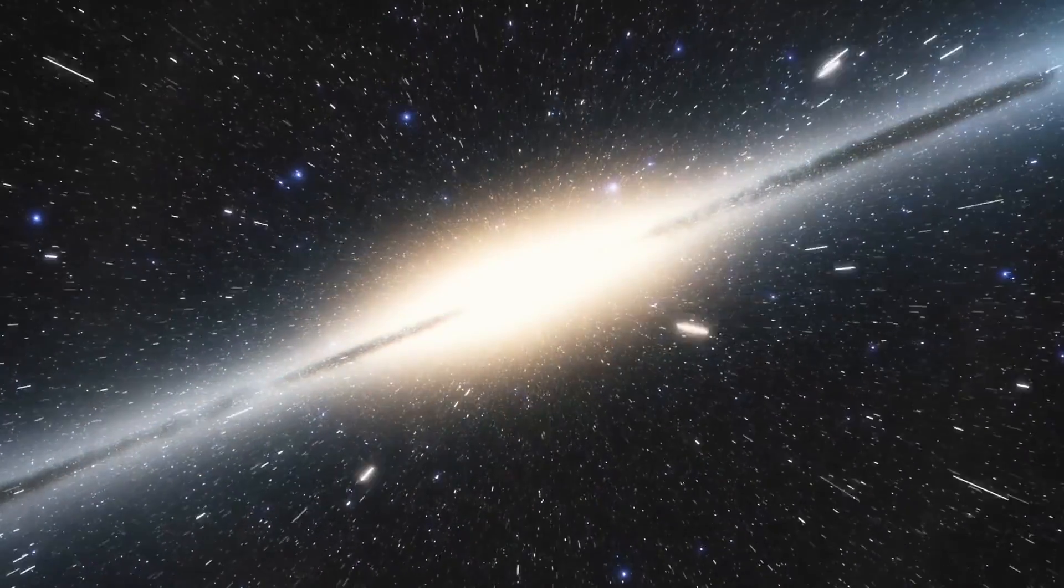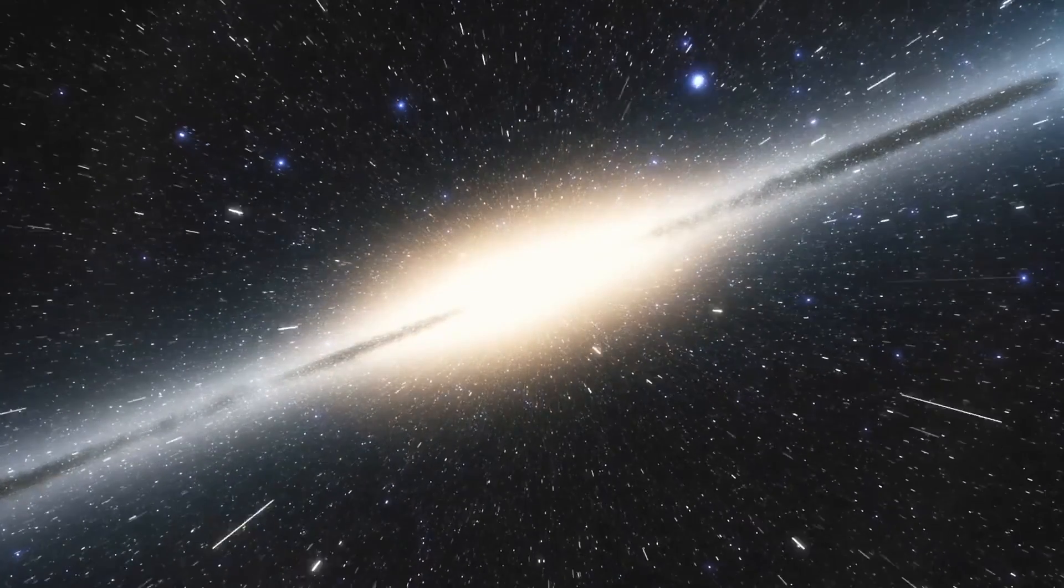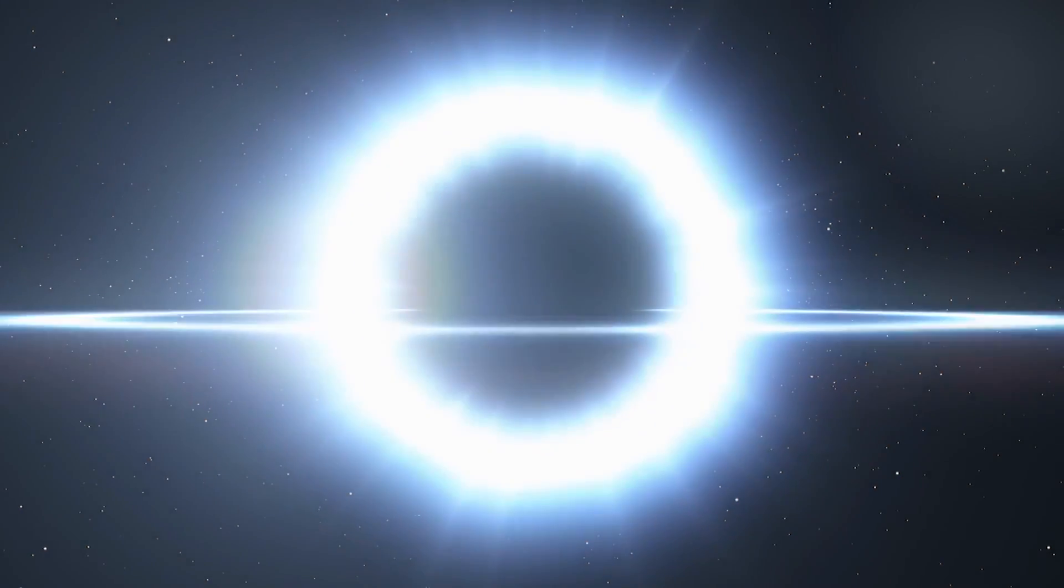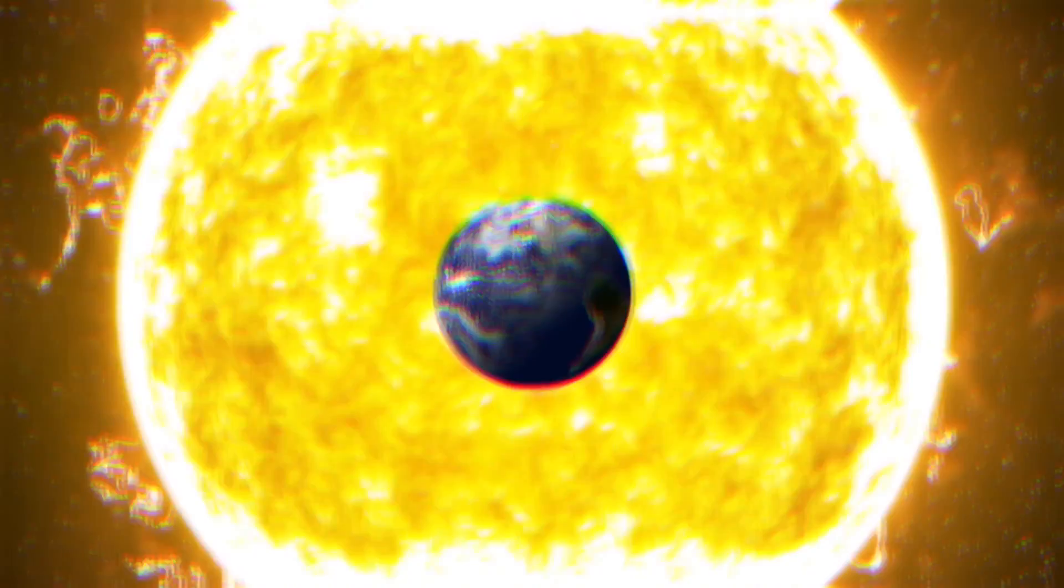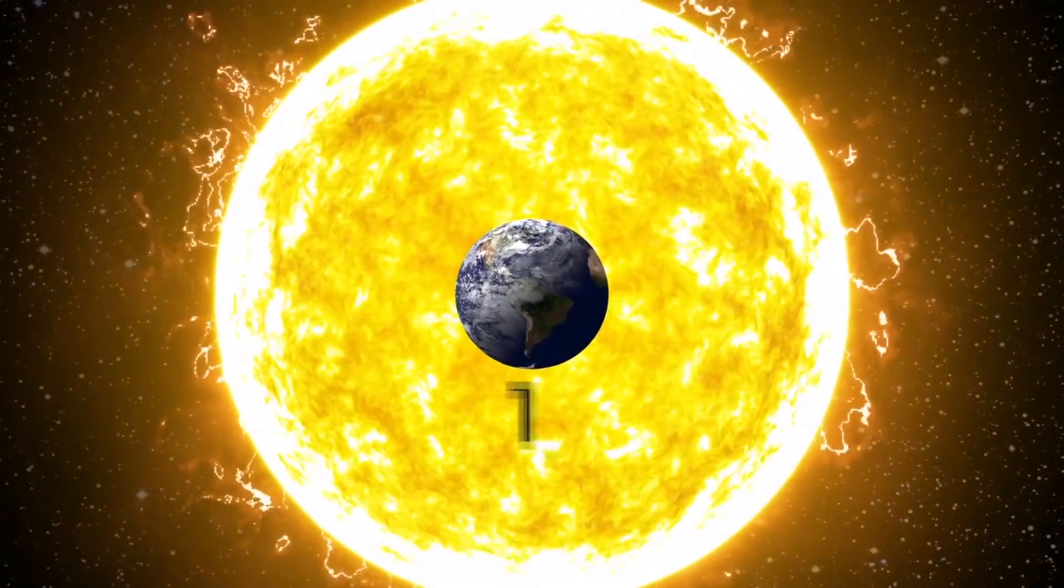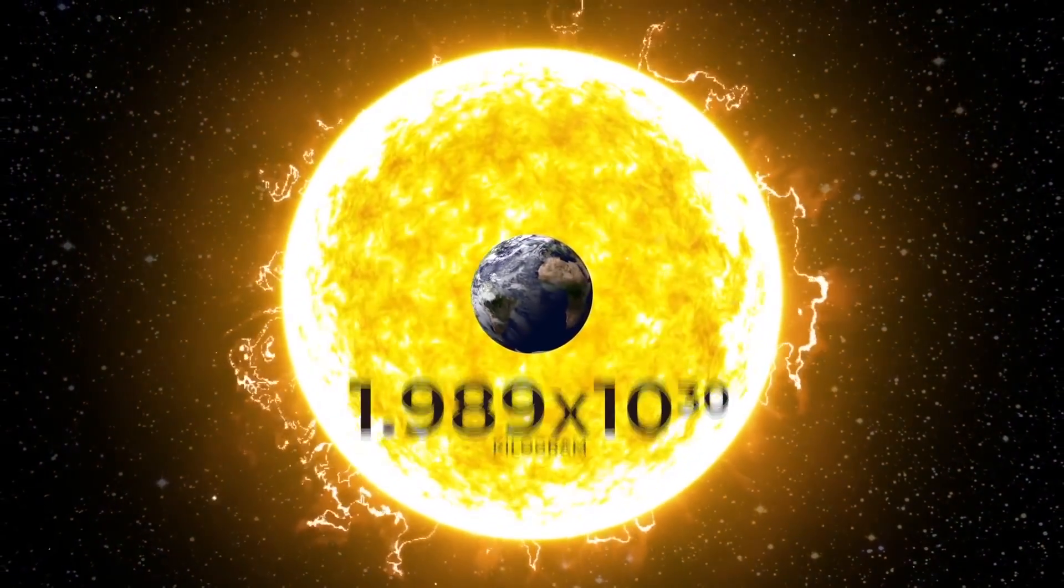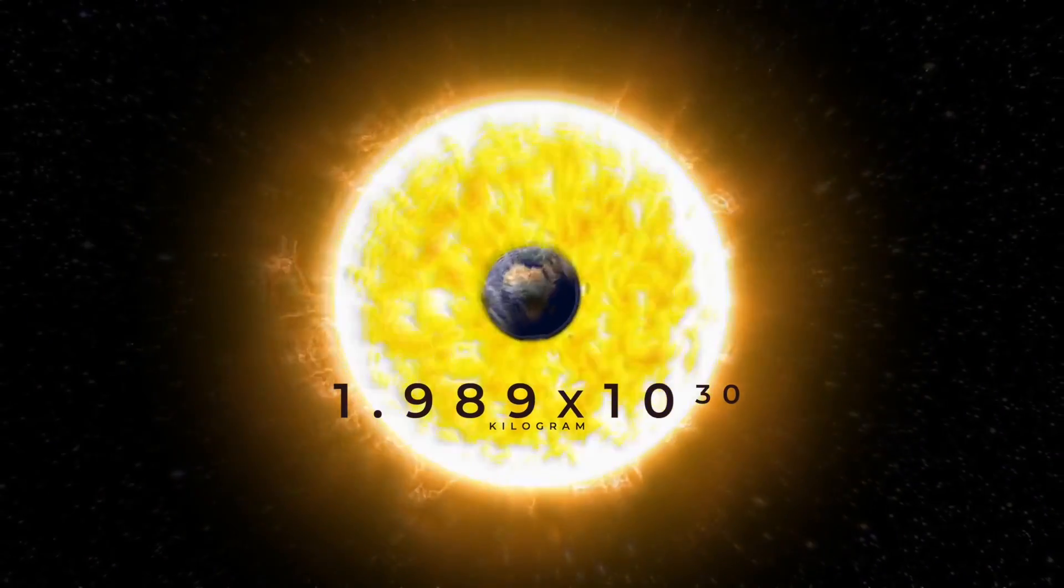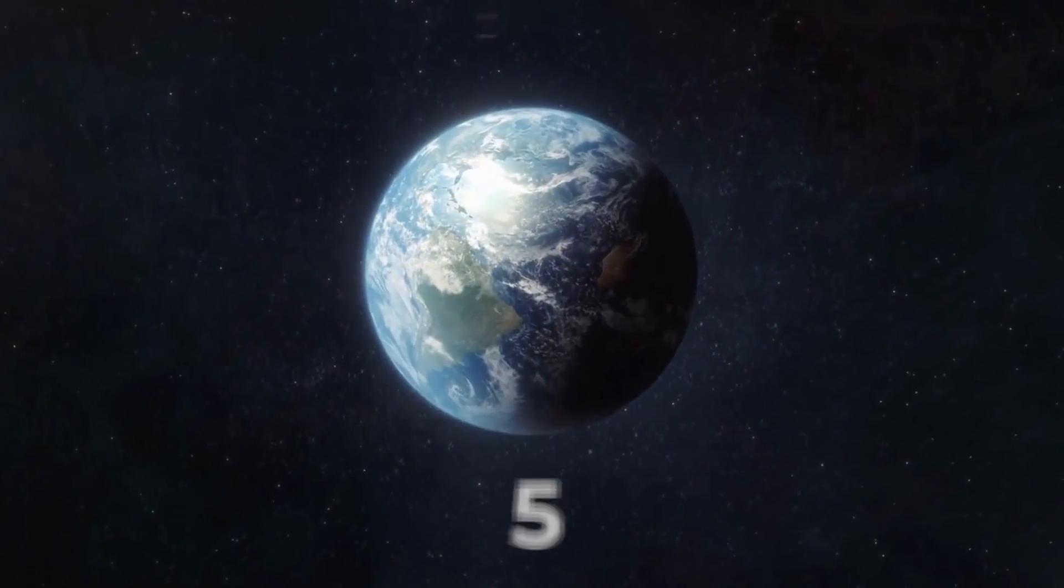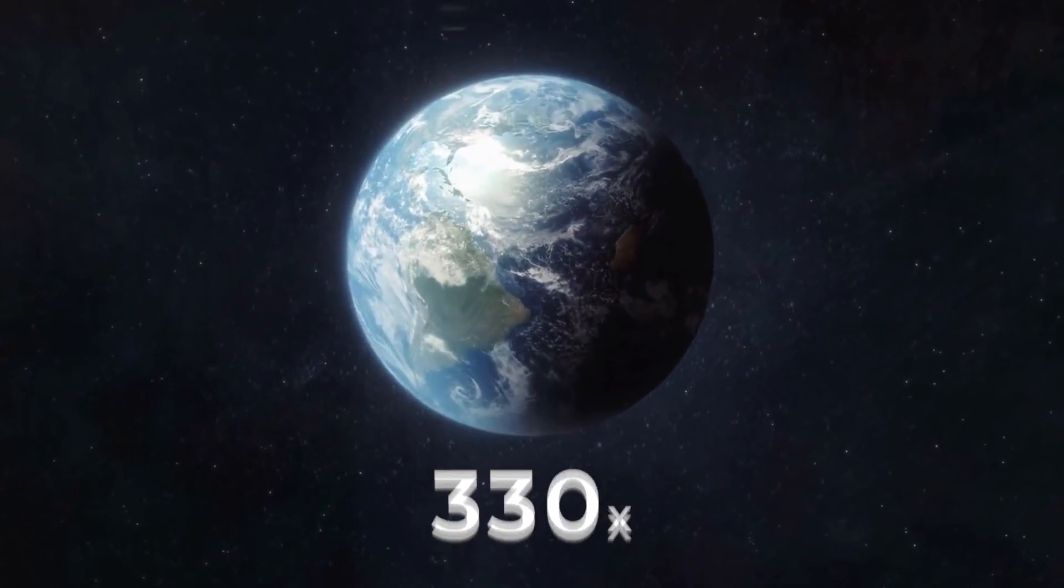This means that if an object is compressed to the size of its Schwarzschild radius, it will become so dense that it will form into a black hole. Our Sun is huge compared to us and has the mass of 1.989 times 10 to the 30th kilograms. That's over 330,000 times the mass of the Earth.